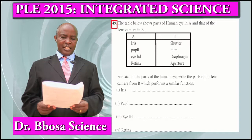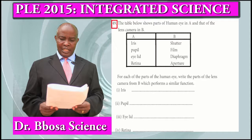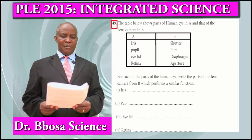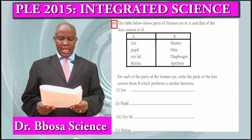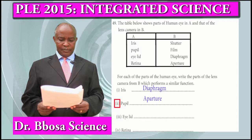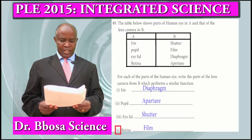Question 49: The diagram shows parts of a human eye in A and parts of a lens camera in B. For each part of the eye, write the part of the lens camera that performs a similar function. Iris — diaphragm. Pupil — aperture. Eyelid — shutter. Retina — film.